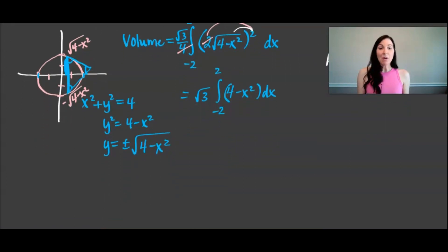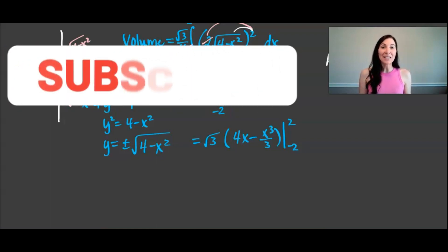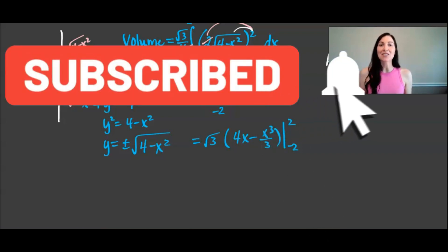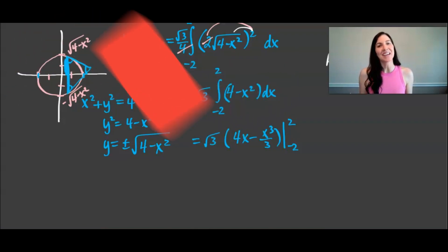What we'd have to do now is we need to integrate. So I'm going to find the antiderivative which would be 4x minus x cubed over 3 and I'm going to evaluate this from negative 2 to 2. I hope you're finding this video helpful so far and if you are make sure to subscribe so that you can watch other calculus videos to help you in your learning of the subject of calculus.